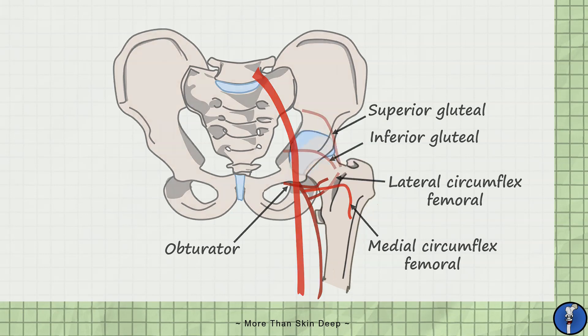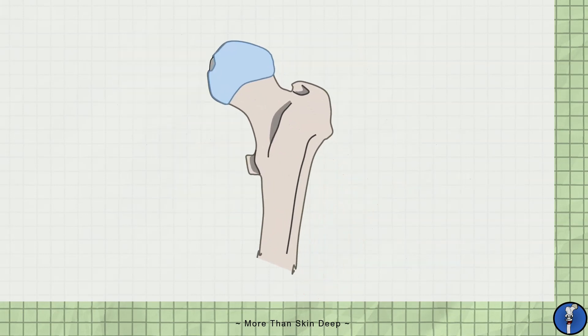Now it's worth taking a closer look at how these blood vessels reach the head of the femur. Aside from the small obturator branch which runs inside the ligamentum teres, all of the blood reaching the head of the femur comes in a retrograde fashion, meaning it starts distally and turns to travel proximally.